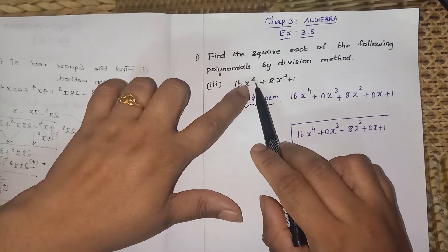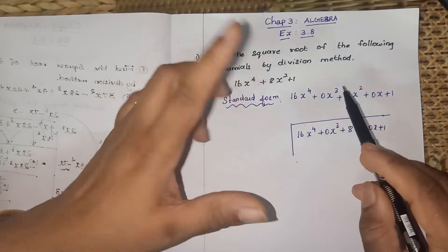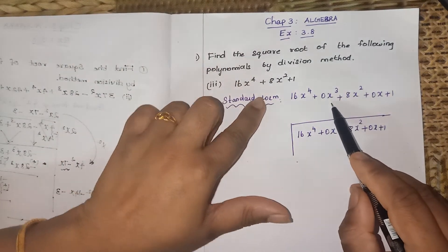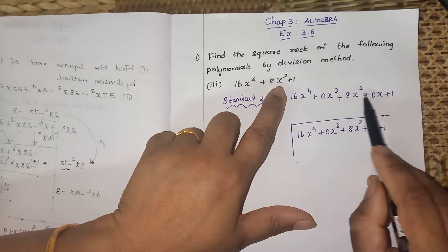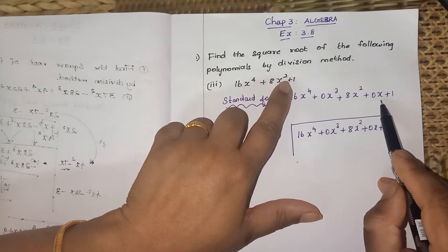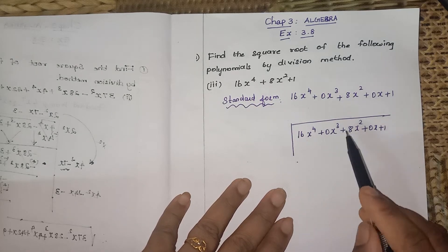See here, power 4, next power 3 is missing, right? So that's what I wrote, 0x cube. Next, 8x square is there. After cube comes x square in decreasing order. Next, the x term is missing, so I am putting 0x plus 1. That's all, so we are going to start the division.